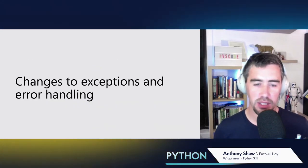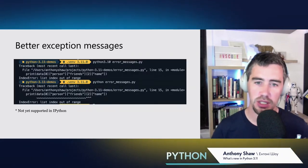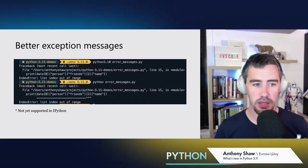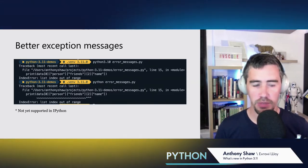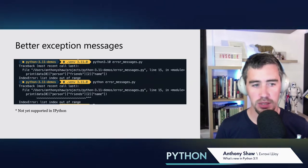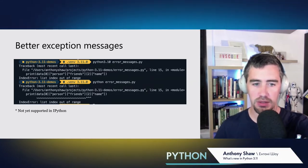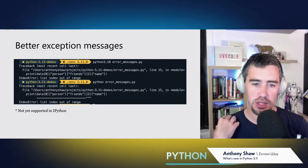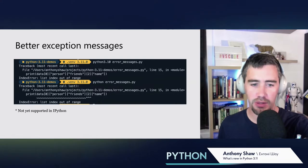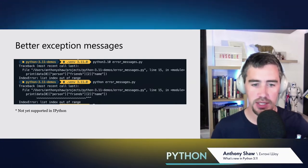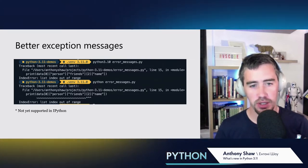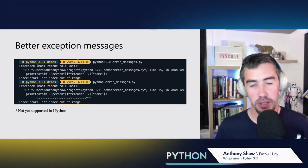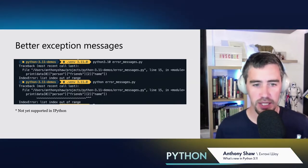One of the changes coming in Python 3.11 is that exception messages are changing. I've got a before and after example — I'm doing a print statement and it's giving me an index error saying the list index is out of range, but it's not clear which part caused the error. In 3.11 you will now get a squiggly line underneath the error message with arrows pointing to which part of the statement actually caused the exception. It's a small feature but a nice one. It's not yet supported in IPython, but it will be probably by the time 3.11 ships.